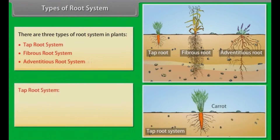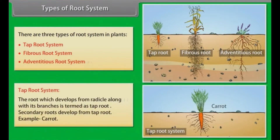Tap root system: The root which develops from the radicle along with its branches is termed as tap root. Secondary roots develop from the tap root. Example: carrot.